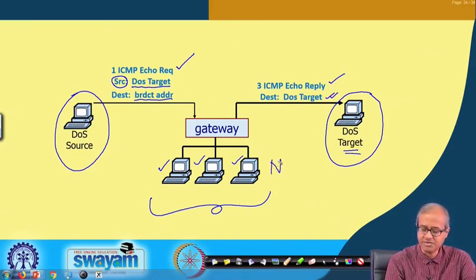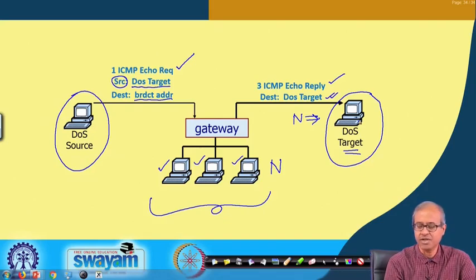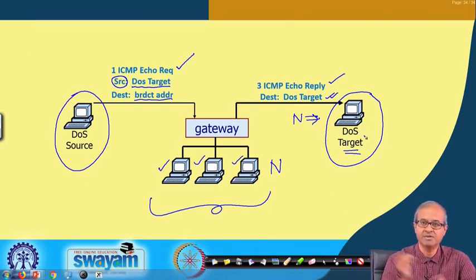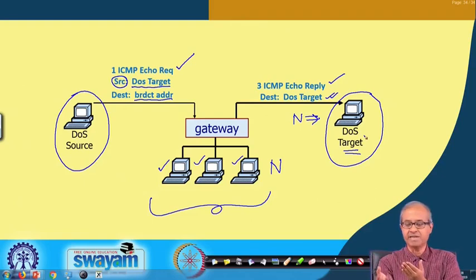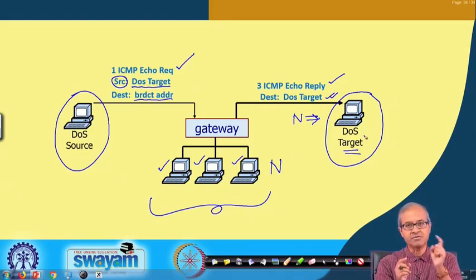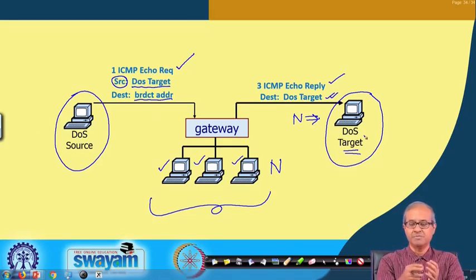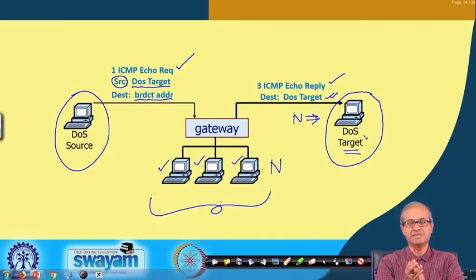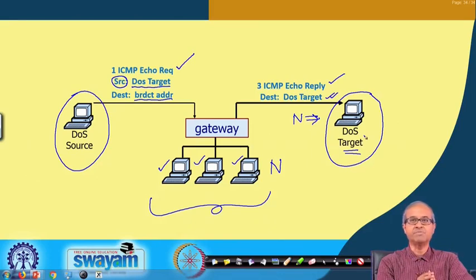If there are N machines in this network, there will be N packets targeted to this host. This is one simple way to overload a server with a large number of junk packets. If a large number of packets reaches the destination, any legitimate user trying to send a packet to access a service will find the link has become very slow because the server's network buffer may become full with incoming packets. Legitimate packets will find the buffers already full and will be discarded — this is denial of service.